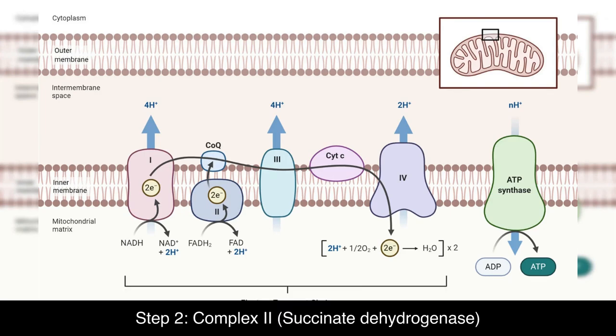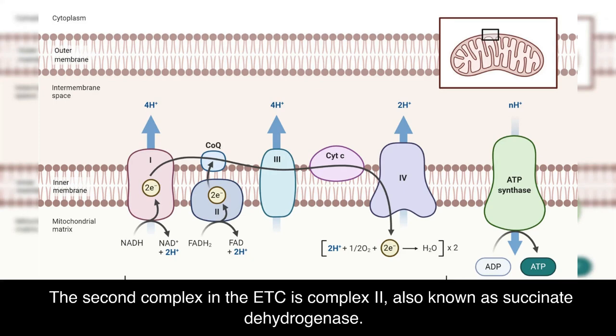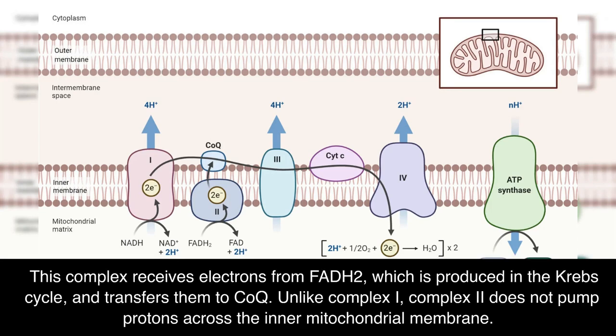Step 2: Complex II — succinate dehydrogenase. The second complex in the ETC is Complex II, also known as succinate dehydrogenase. This complex receives electrons from FADH2, which is produced in the Krebs cycle, and transfers them to CoQ. Unlike Complex I, Complex II does not pump protons across the inner mitochondrial membrane.